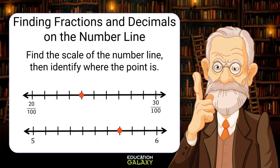This first number line starts at 20 hundredths and ends at 30 hundredths, spanning 10 values. That means each mark on the number line is worth 1 one hundredth. So our point is on 24 hundredths.